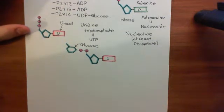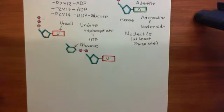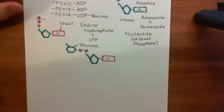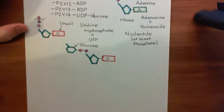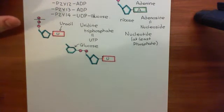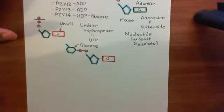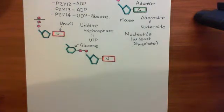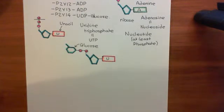Welcome back to this next video in which we are discussing P2Y receptors. We've now discussed the eight different types of P2Y receptors and the different ligands that activate them. We now want to discuss the fact that all eight of these receptors are G-protein coupled receptors, and we want to discuss some general stuff about G-protein coupled receptors so that we can understand what the activation of these receptors is actually going to do.